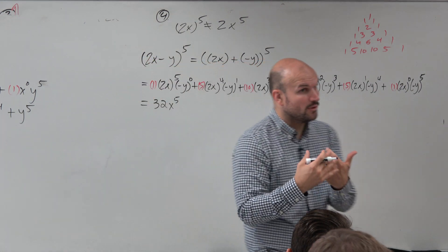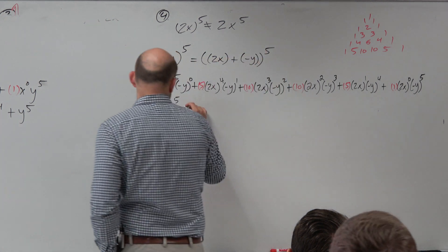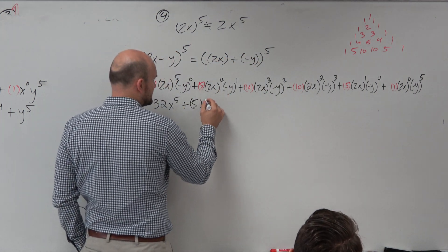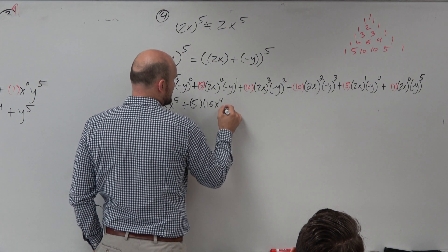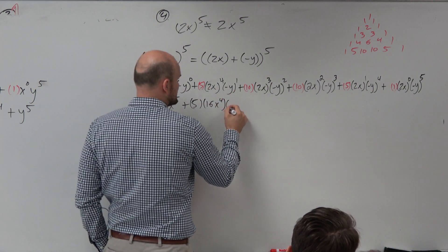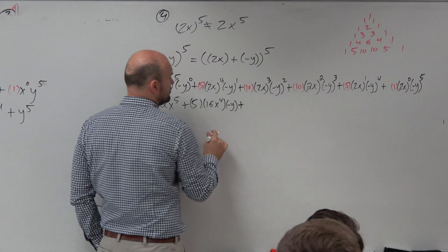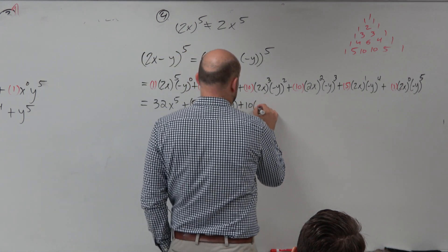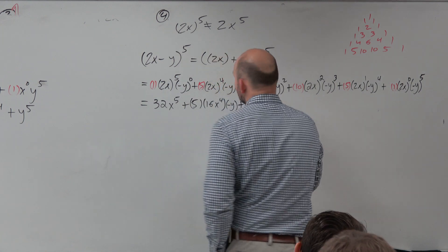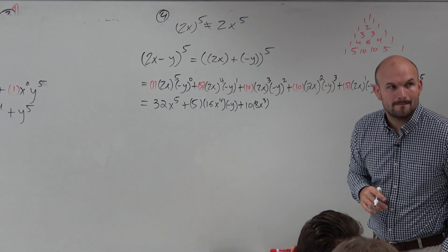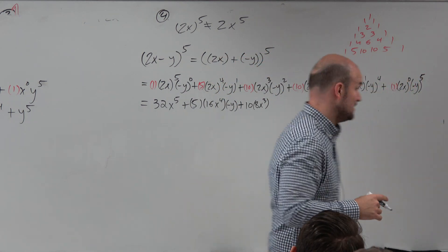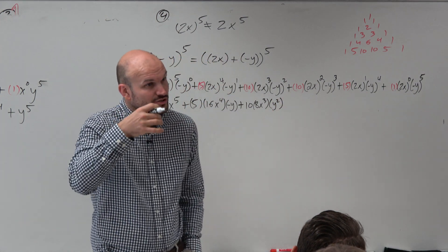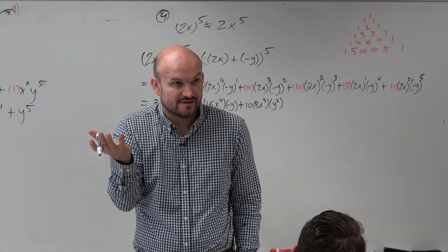The next one starts to get important. I'll do two steps. So 5 times: 2x to the fourth is going to be 16x to the fourth. Negative y to the first is a negative y. Plus 10 — 2x cubed is going to be 8x cubed. Negative y squared is positive y squared. Remember, whenever you have a negative term raised to an even power, it's positive.